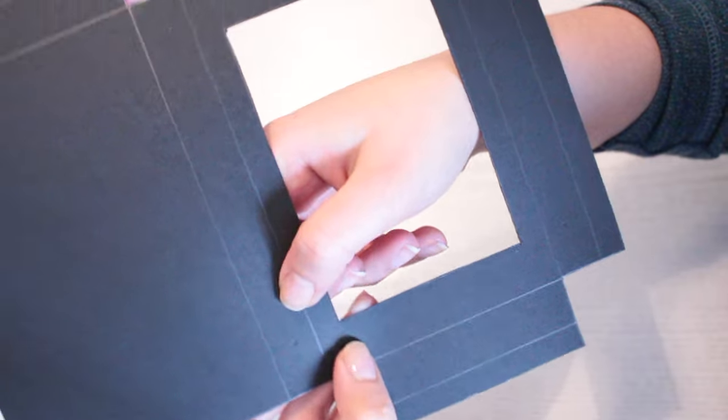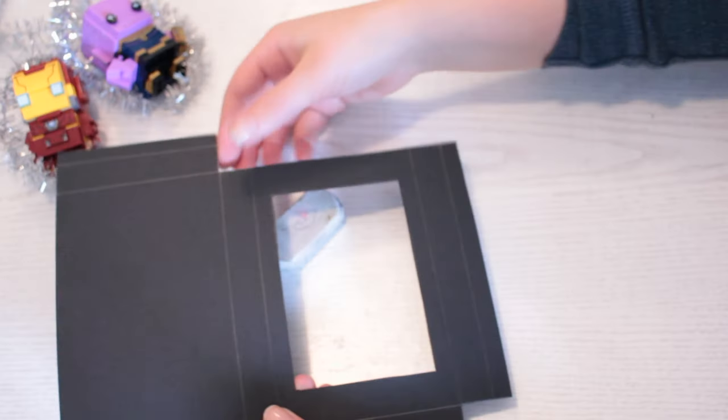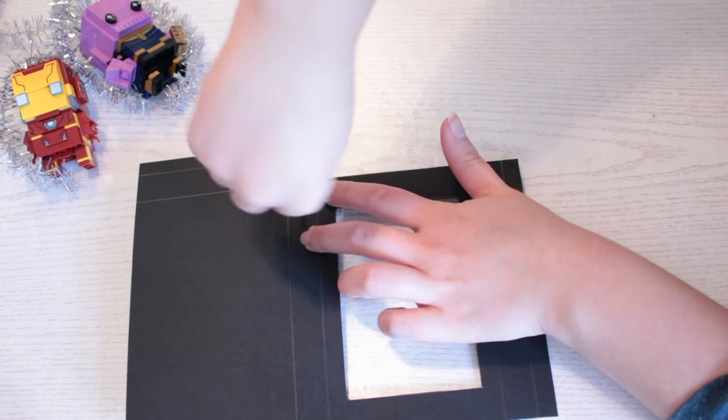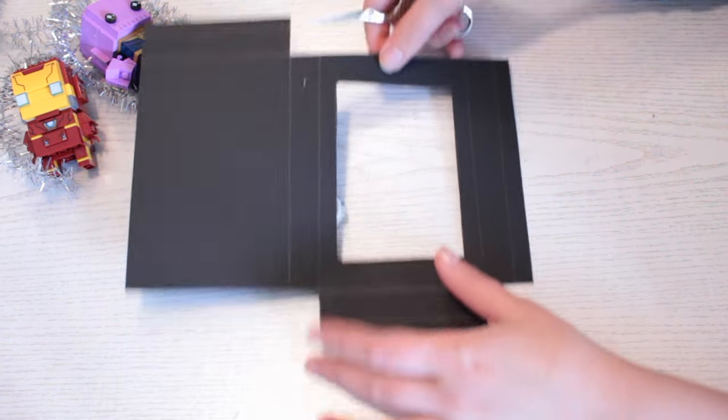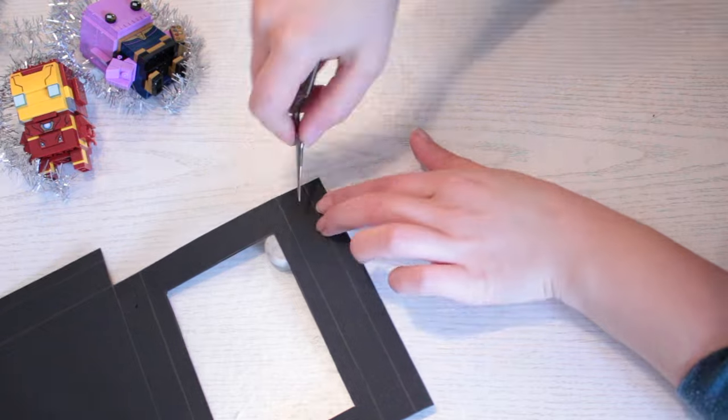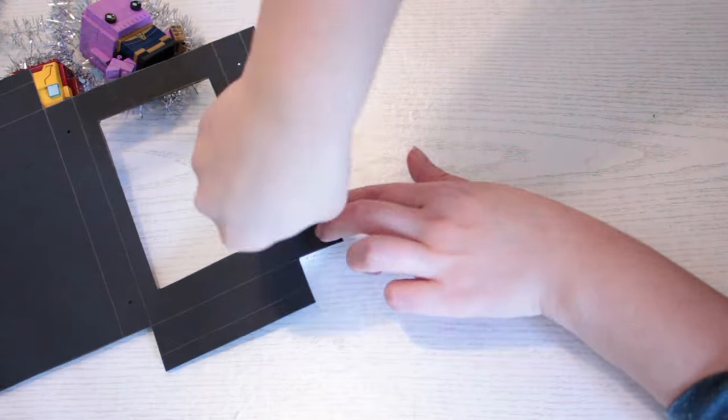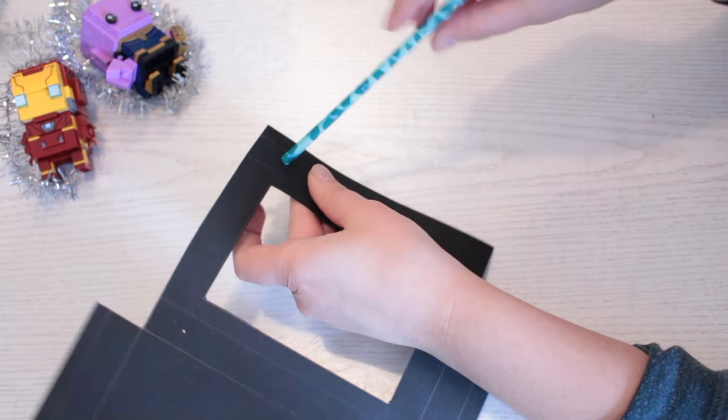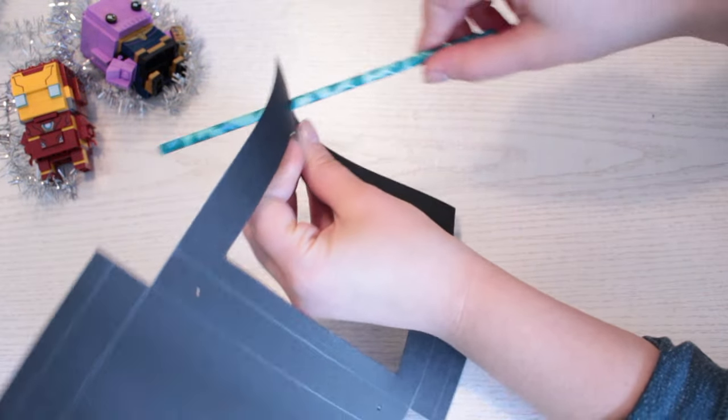We need to open up these holes for the handles, so place your card on top of an eraser to protect your table. Take something sharp like a scissor and poke through. Do this with the other holes as well. Make the holes big enough for the straws to fit, and make sure the straws move easily.